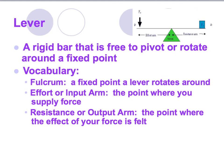Some vocabulary for levers: the fulcrum is the fixed point the lever rotates around — like the middle of a seesaw. The effort arm is the input side, where you supply the force. The resistance arm, also called the output arm, is where the effect of your force is felt — it's where the machine outputs what you put in.